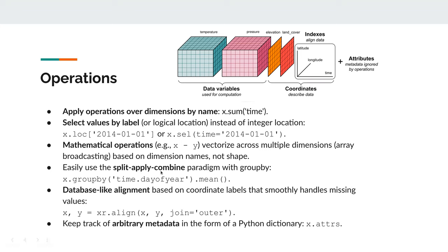You can easily apply the split-apply-combine pattern and use things like group by, which is especially useful for large datasets. There's also database-like alignment, which is important if you have missing data or if two datasets don't completely match — one has a bit more rows, some rows are missing, and so on. xarray can figure out what belongs together and perform inner/outer joins between your data cubes, which is important when working with data from different sources that isn't perfectly standardized.